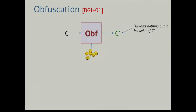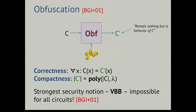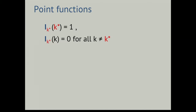Let me start with obfuscation. By an obfuscator, I mean an efficient randomized algorithm that takes a circuit and transforms it into another circuit C prime, which should not leak anything about a circuit C other than its input-output behavior. It should do this by preserving functionality — we want correctness, meaning C prime behaves the same as C on all inputs. And of course we want C prime not to be much larger than C.